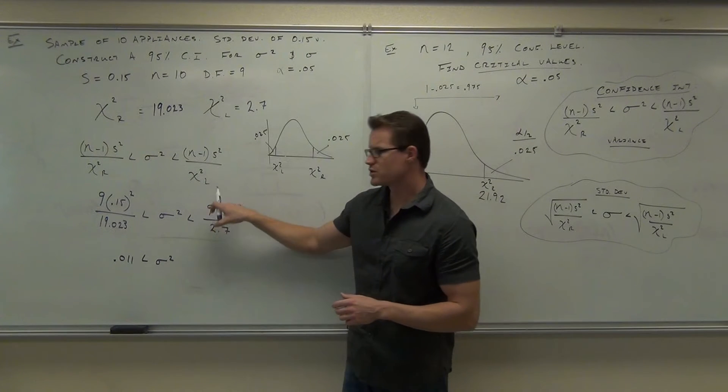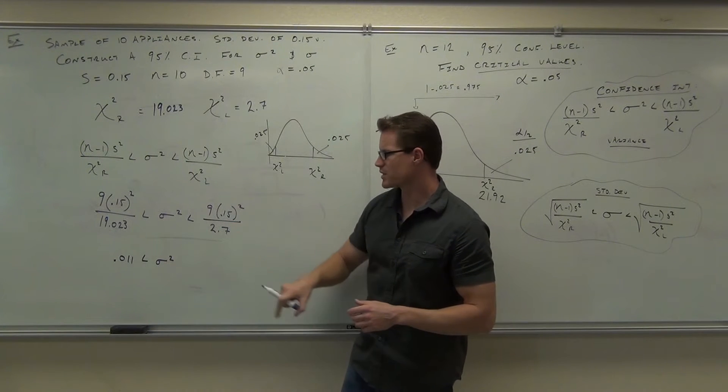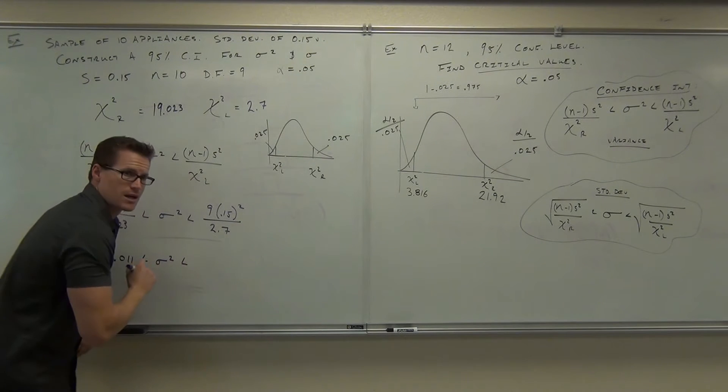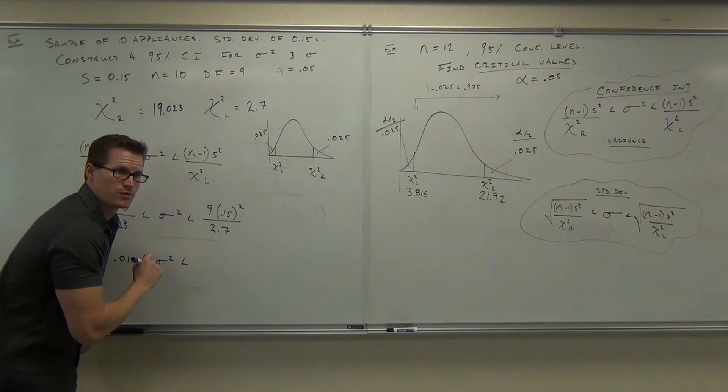And then this upper one, you're doing the same exact thing, only you're dividing by 2.7. What's the upper range? 0.0106. What is that? 0.750.